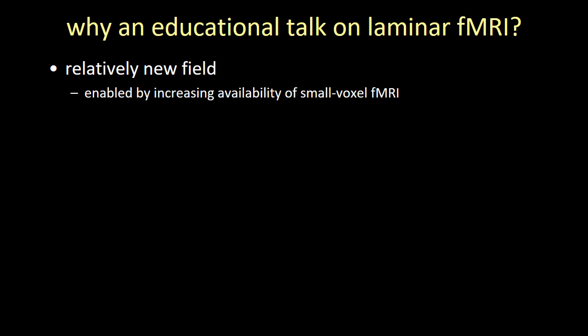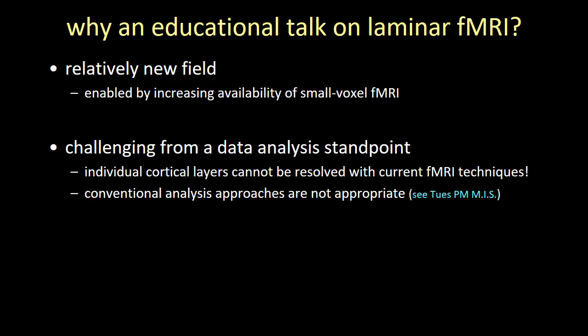So why an educational talk on this topic? It's a relatively new field, enabled by increasing availability of high-field fMRI, but it's also very challenging from a data analysis standpoint. Individual cortical layers really can't be resolved with current fMRI techniques, so we need strategies to localize activity within individual cortical layers. Conventional analysis approaches are not appropriate, and I'm giving an entire talk in a Tuesday member-initiated symposium on the analysis of laminar fMRI data.